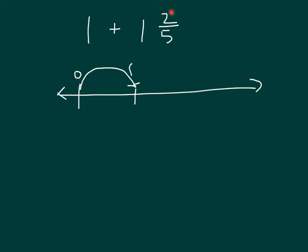We still need to travel 1 and 2 fifths. We'll start at 1 now and travel 1 more unit. Where do we land? 2. We have traveled this other unit with that 1 there and with that 1 there. How far do we need to travel still? 2 fifths.